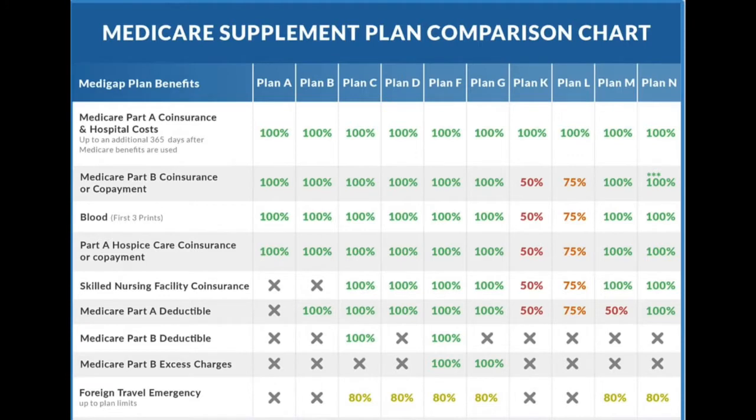We're throwing up a graphic — the Medicare supplement plan comparison chart — which shows Medicare Part A, B, hospice stays, and other care providers on the left. Across the top it shows plans A, B, C, D, F, G, K, L, M, and N. There are a lot of different letters and they don't go in alphabetical order perfectly, and some letters are left out.